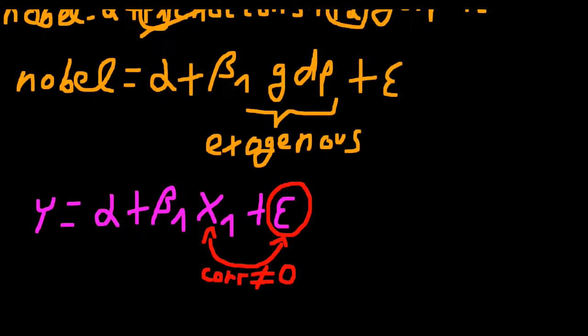And also omitted variables that simply cannot be measured. Well, this is also pretty straightforward. And let's take an example, a very common example in labor economics is measuring the determinants of wages.